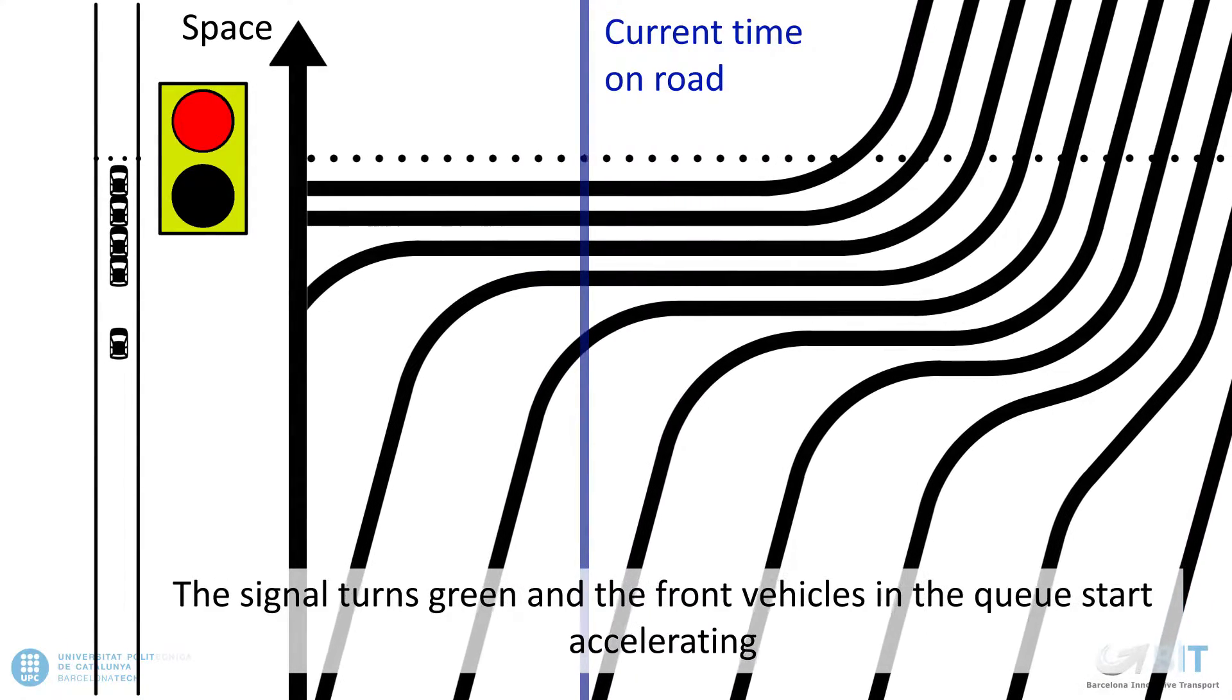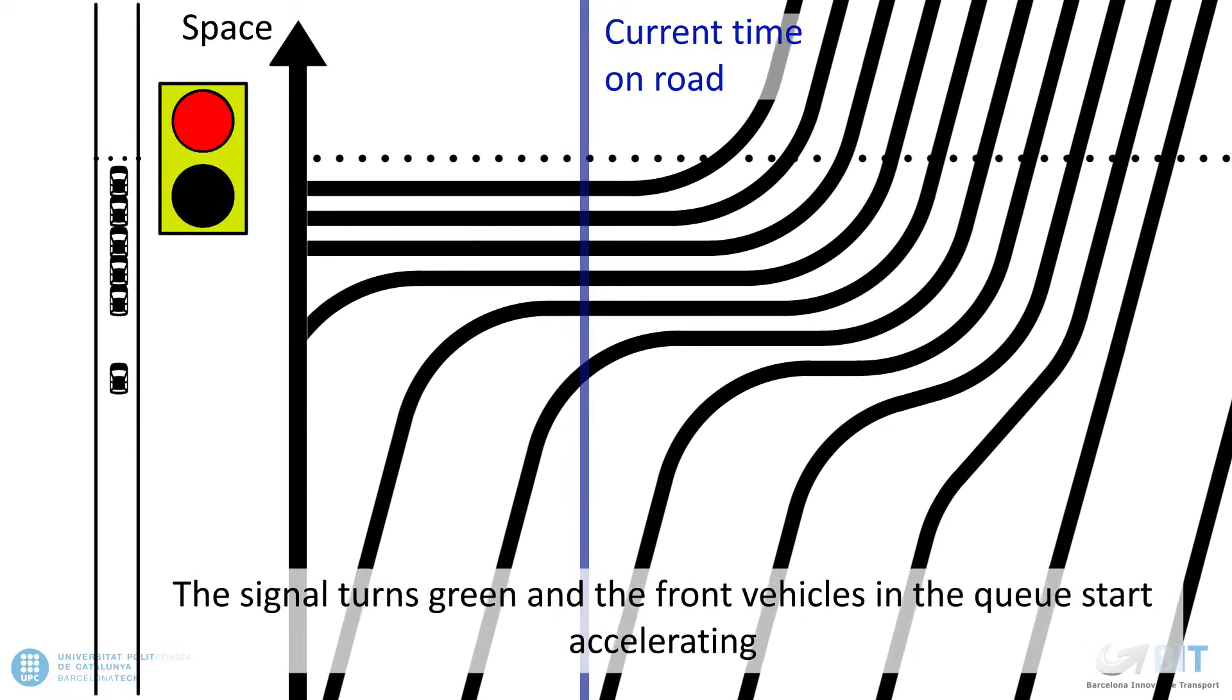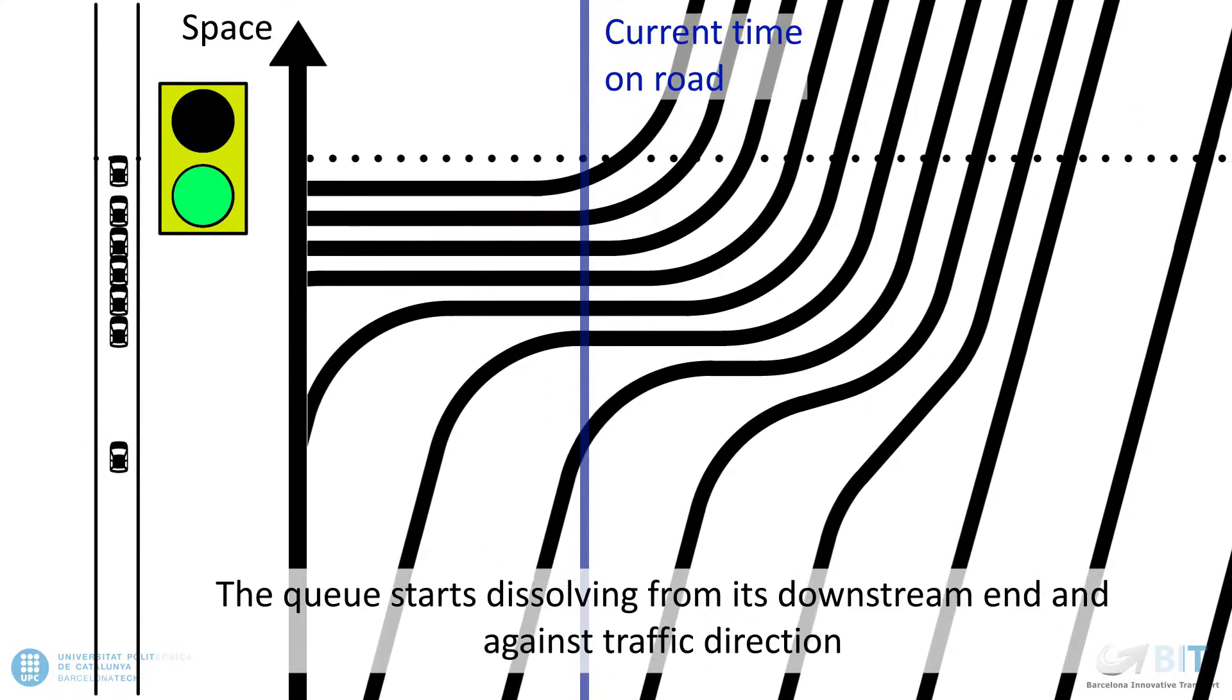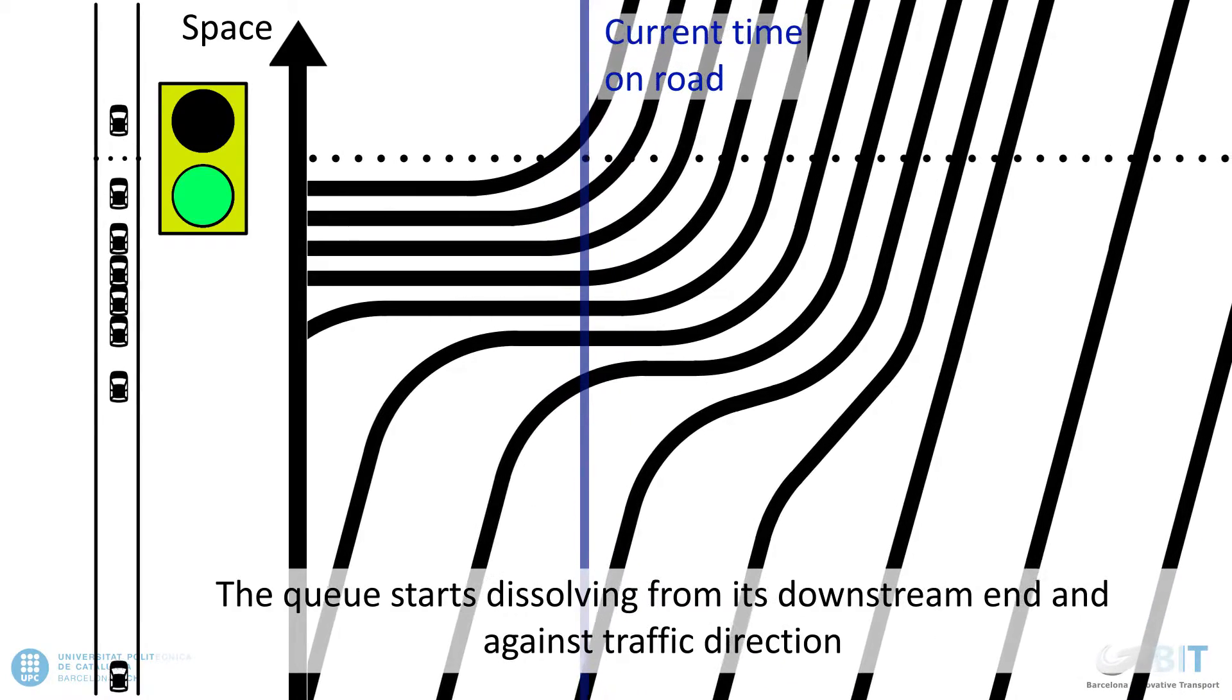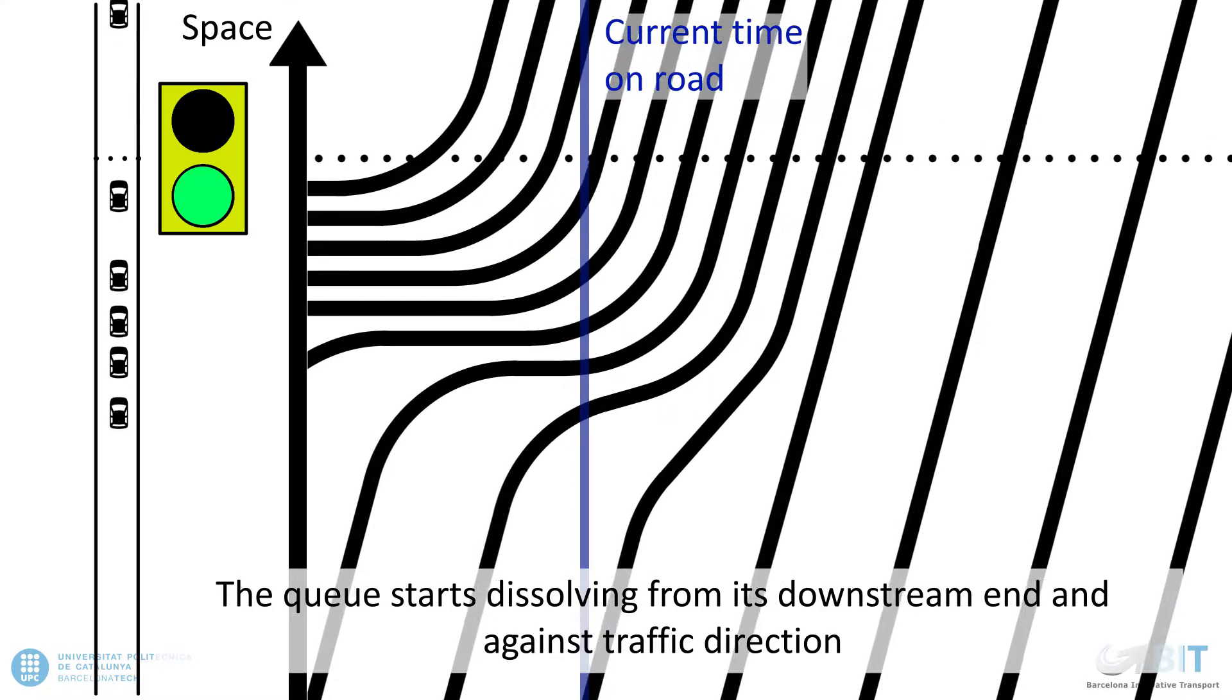The signal turns green and the front vehicles in the queue start accelerating. The queue starts dissolving from its downstream end and against traffic direction.